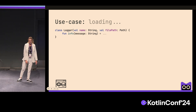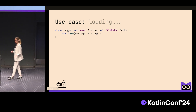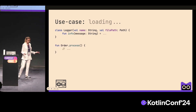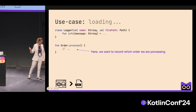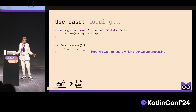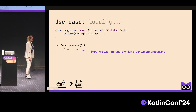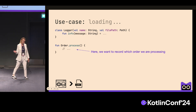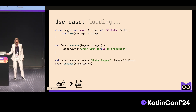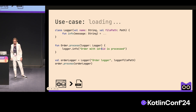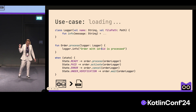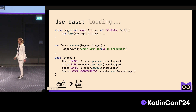Imagine we are backend developers and we have a class called Logger. We also have a top-level extension function called process. As responsible backend developers, we want to record which order we are processing in this function. The first idea is to add a function parameter. This works, but only for simple cases. Problems begin when we have several functions which require the logger, and as you can see, it already looks messy.